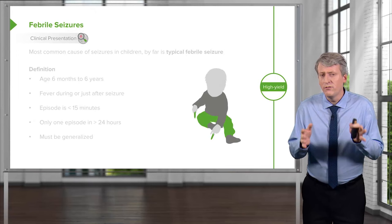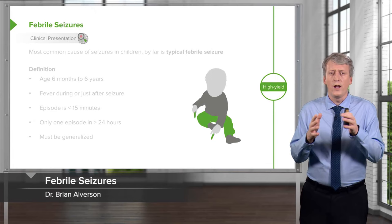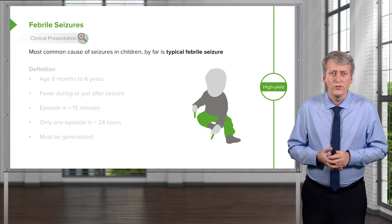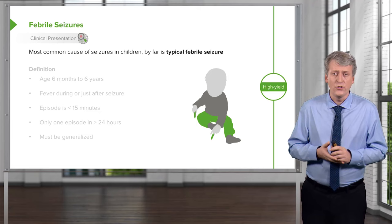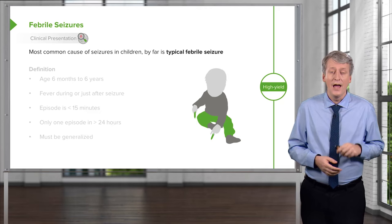The last, very benign type of seizure I'll discuss is febrile seizures. These are incredibly common — the most common cause of seizures in children by far. We define a typical febrile seizure for a very good reason: if you detect it, you need to do no workup at all.